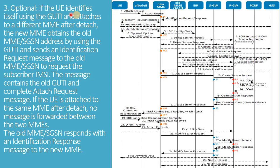Optionally, if the UE identifies itself using the GUTI and attaches to a different MME after detach, the new MME obtains the old MME/SGSN address by using the GUTI and sends an identification request message to the old MME/SGSN to request the subscriber IMSI. The message contains the old GUTI and complete attach request message. If the UE is attached to the same MME after detach, no message is forwarded between the two MMEs. The old MME/SGSN responds with an identification response message to the new MME.